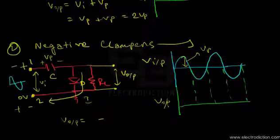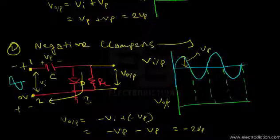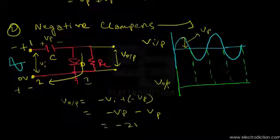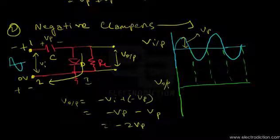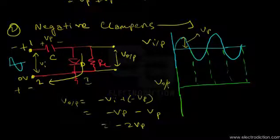The output voltage during this stage is minus Vi plus minus Vp. Considering only the peak value of the input signal, we have minus Vp plus minus Vp, which gives minus 2Vp. So our output varies within the limits of 0 and minus 2Vp, and the output waveform is shifted downward toward the negative voltage region.